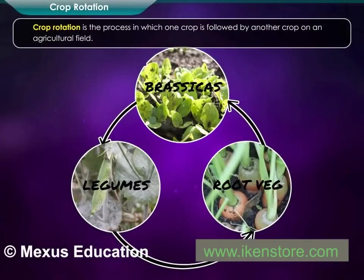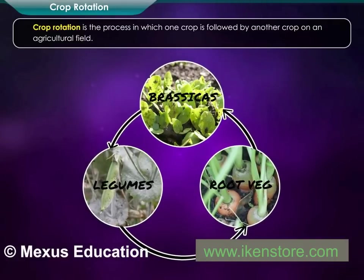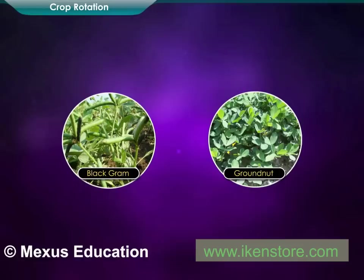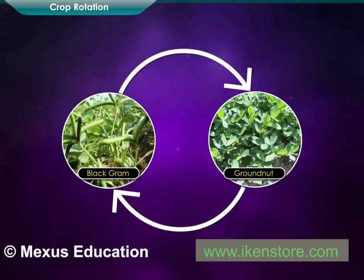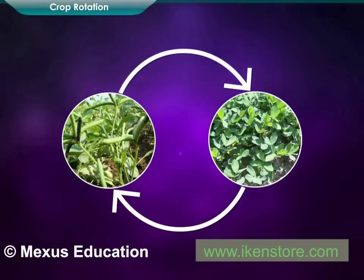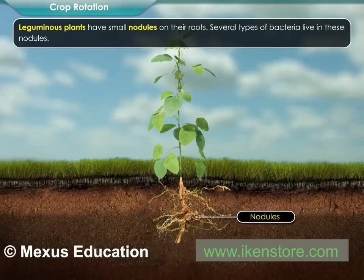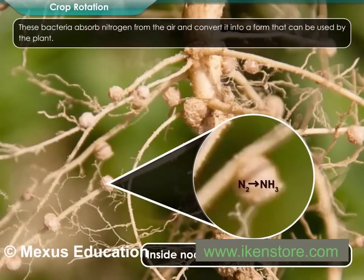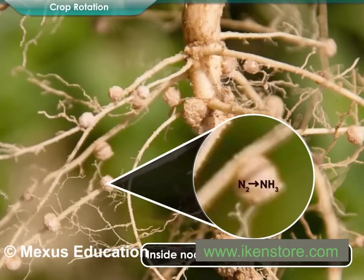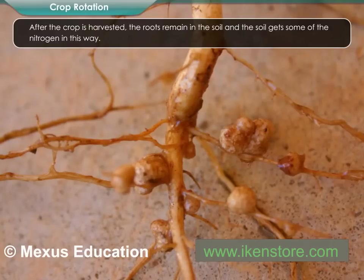Crop rotation is the process in which one crop is followed by another crop on an agricultural field. For example, after cultivation of paddy or black gram, groundnut is grown, followed by paddy again for the cycle to continue. Leguminous plants have small nodules on their roots where bacteria live, absorb nitrogen from the air, and convert it into a form usable by the plant. After harvest, the roots remain in the soil, enriching it with nitrogen.